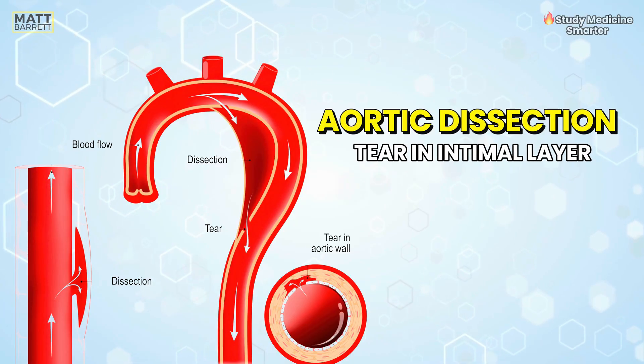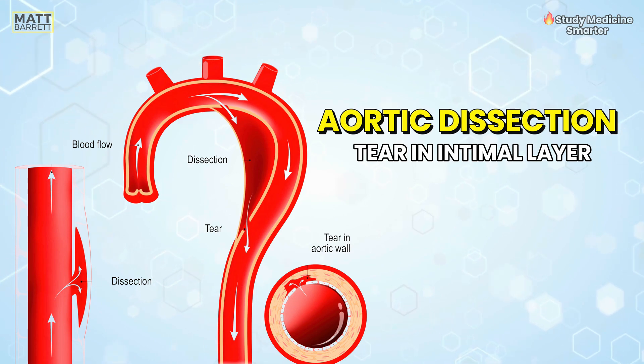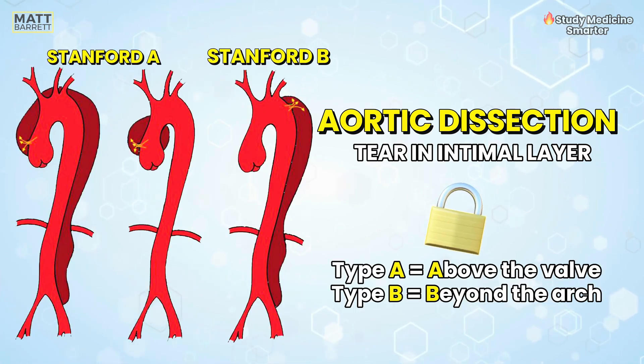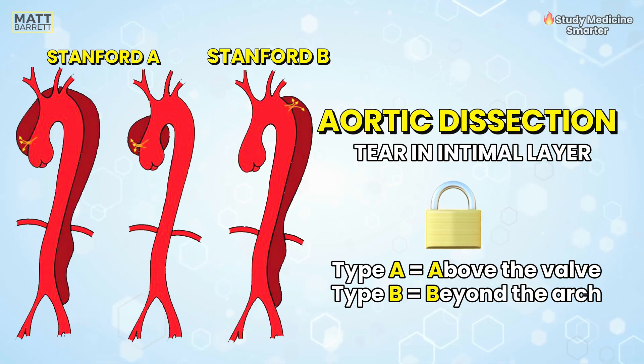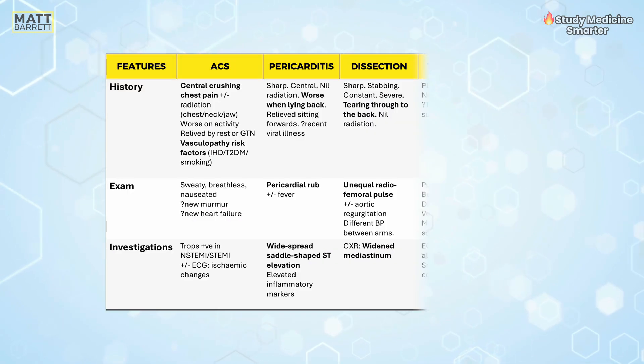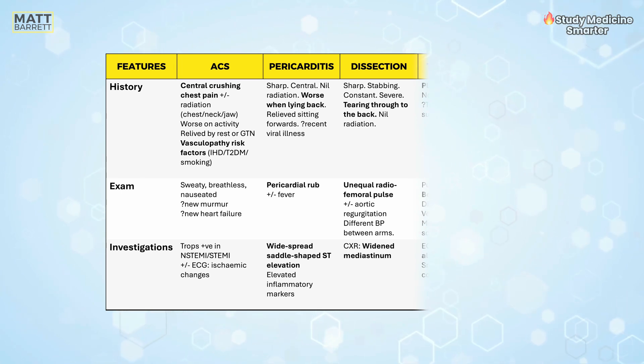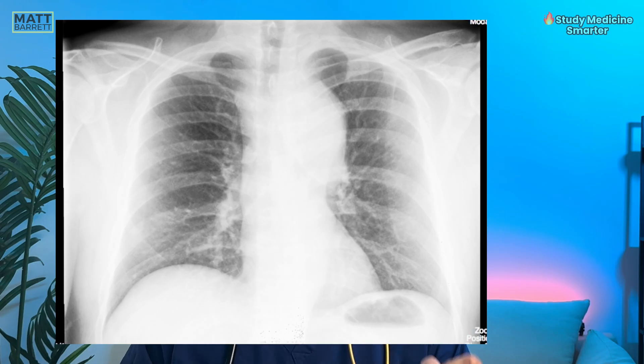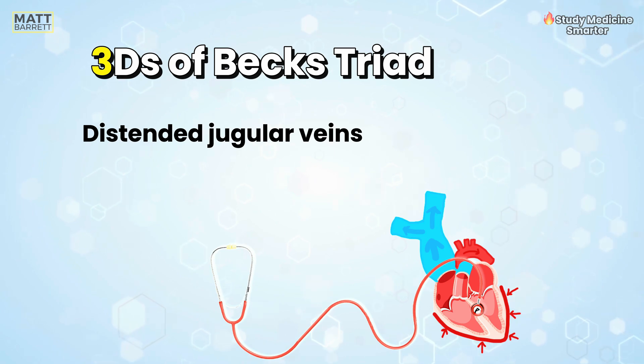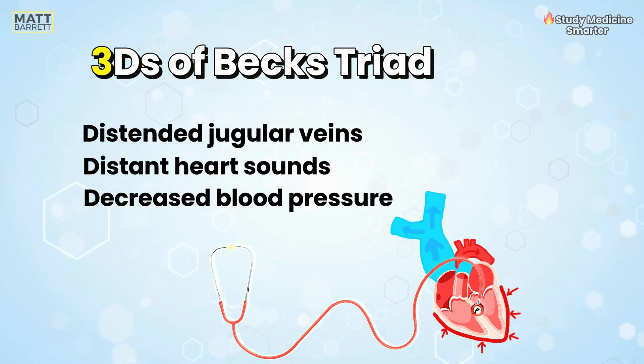Next, aortic dissection — another very worrying one. This is when the intima layer of the aorta tears. There are two types depending on whether the tear is above the aortic valve or after the bend of the aorta. The exam findings may be normal, but a classic feature is a difference in blood pressure between the left and the right arms, and the chest x-ray should show a widened mediastinum. A cardiac tamponade is when blood accumulates in the pericardium. You can spot this in exams by looking for Beck's triad — remembered by the three D's: distended jugular veins, distant heart sounds and decreased blood pressure.